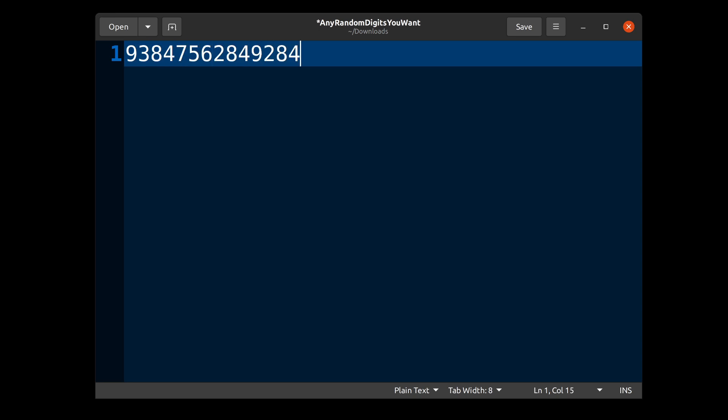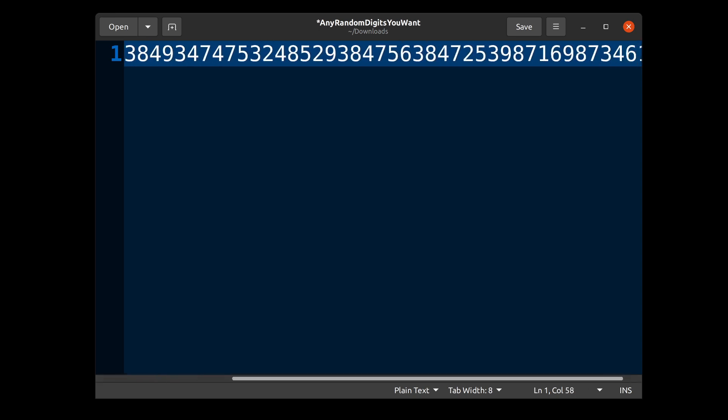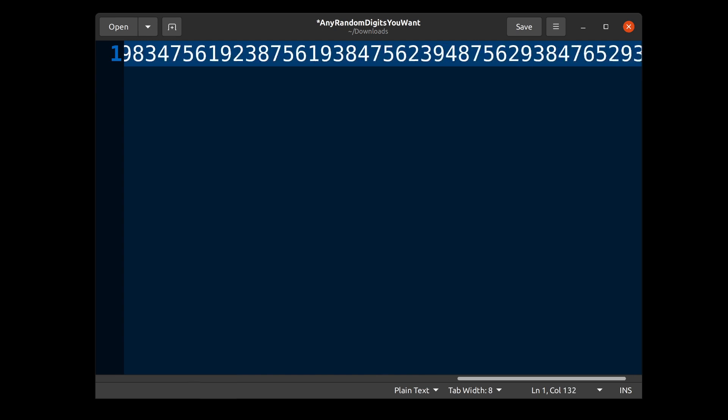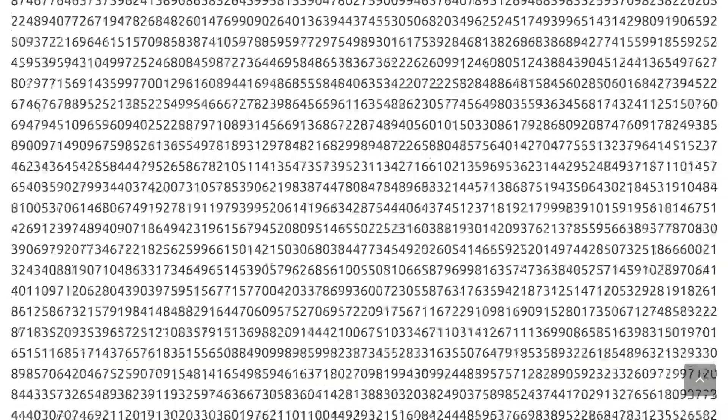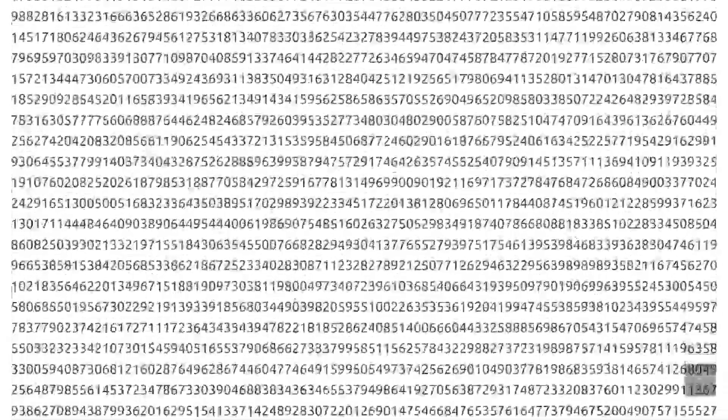If pi truly is normal, every string of digits, no matter how long, would be equally common. And since the decimal expansion of pi goes on forever, this would mean that any string of digits you want can be found in pi somewhere down the line.